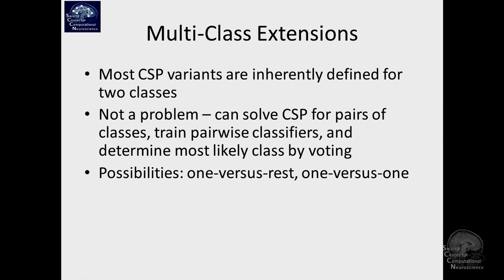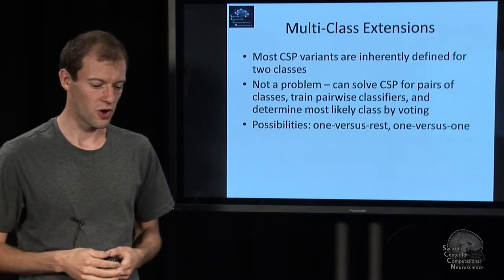CSP by itself, as defined in the book, is for two classes — class one and class two — using joint diagonalization of covariance matrices. You can generalize it to multiple classes using voting, just like in machine learning: predict class one versus two, class two versus three, three versus four, assign scores, and see which class gets the most scores. You can do one-versus-rest, one-versus-all, and so on.